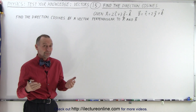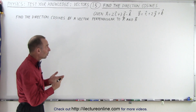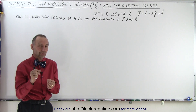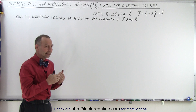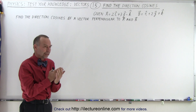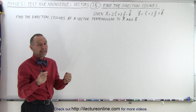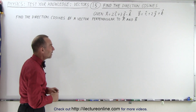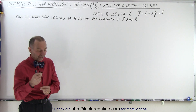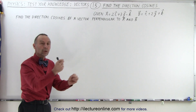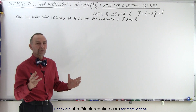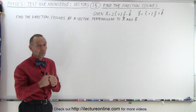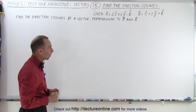To find the vector perpendicular to a and b we should take the cross product, or the vector product, and then find the direction cosines of it. If we find a perpendicular vector, the direction cosines will be equal to any perpendicular vector to a and b, because a perpendicular vector can be moved anywhere — the direction cosines of any vector perpendicular to those two will be the same.